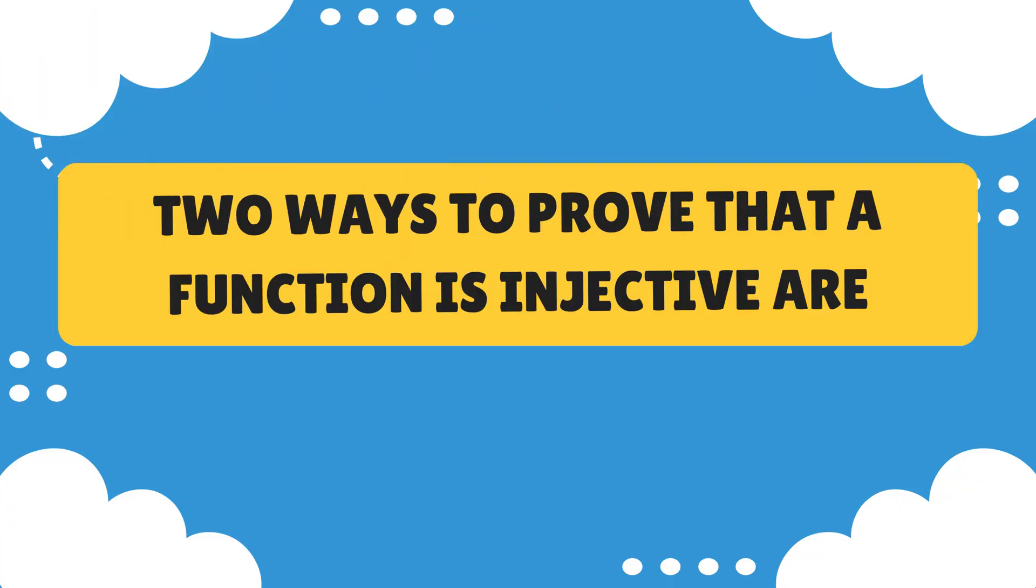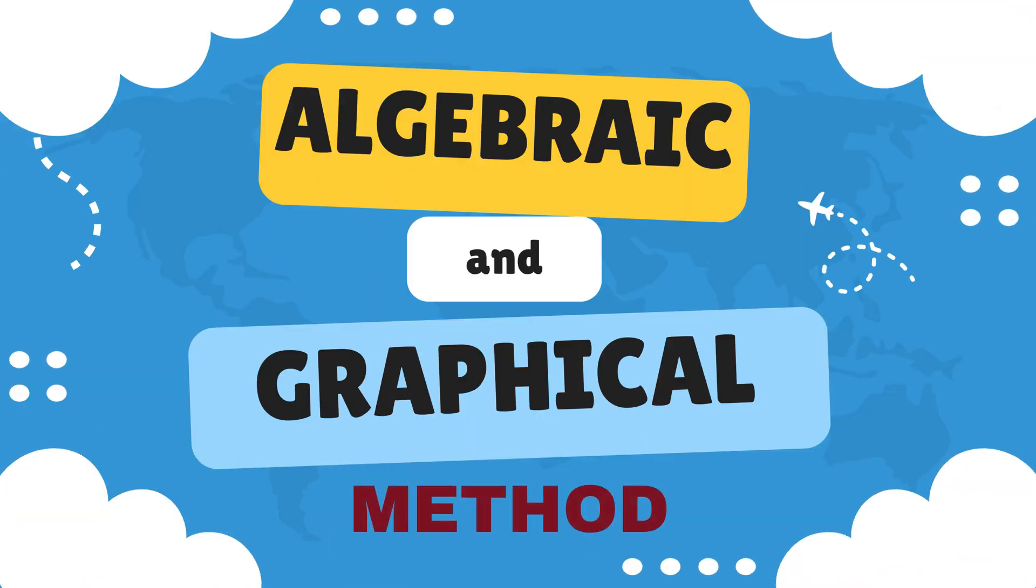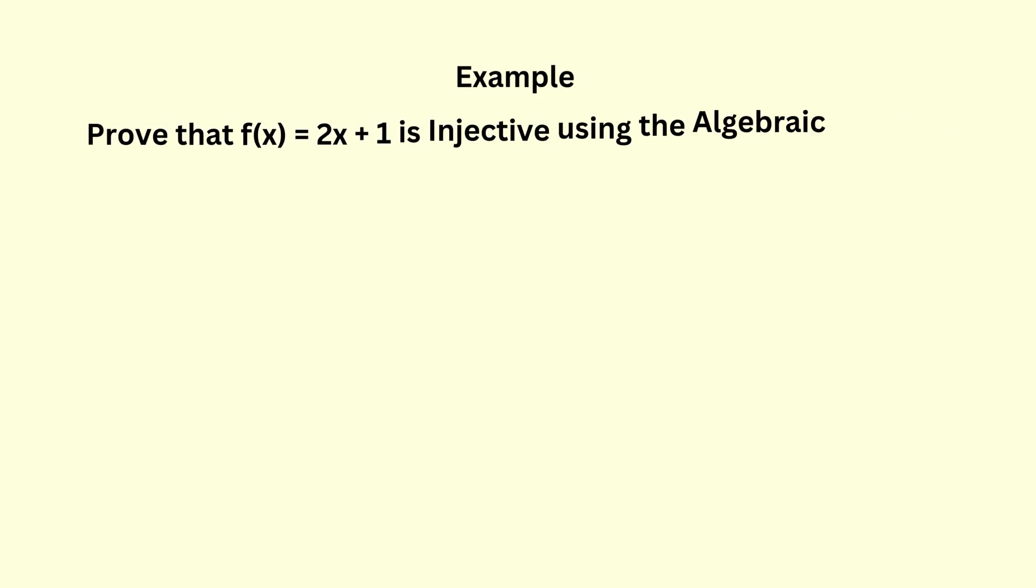Two ways to prove that a function is injective are the algebraic method and the graphical method. Now, let's try some examples.